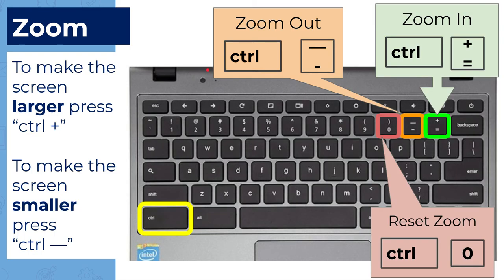To make the screen larger, hit Control and press the Plus button towards the top of your keyboard. To zoom out or make it smaller, hit Control and the Minus button. And then to reset the zoom back to its default, hit Control and zero.